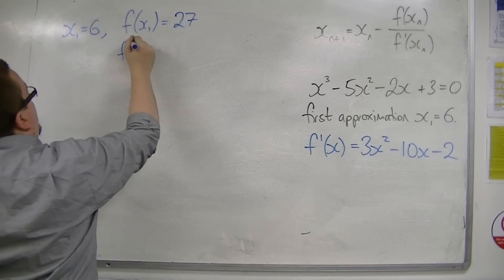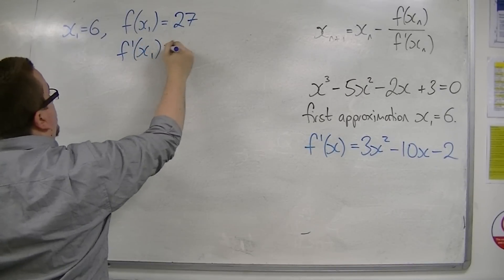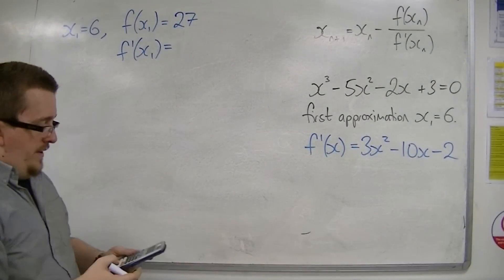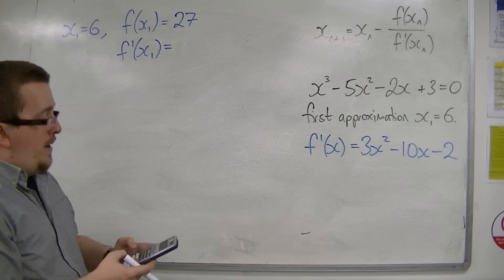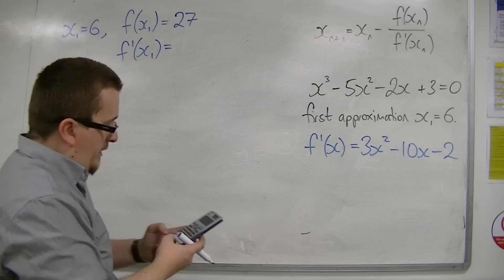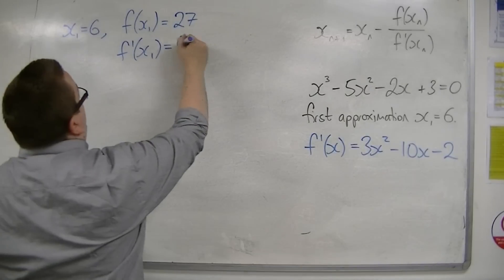And I also need f prime of x1. So substitute 6 into this one. So 3 times 6 squared, take away 10 times 6, take away 2. And that gets me 46.